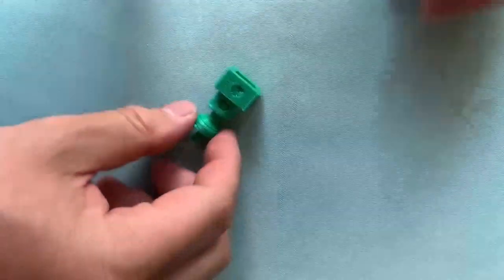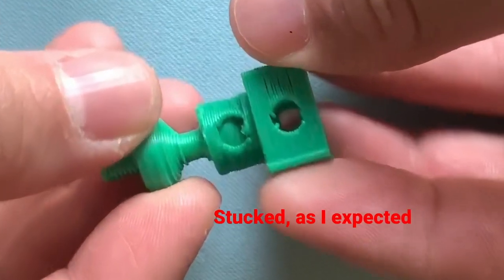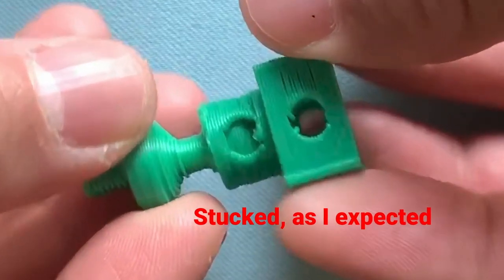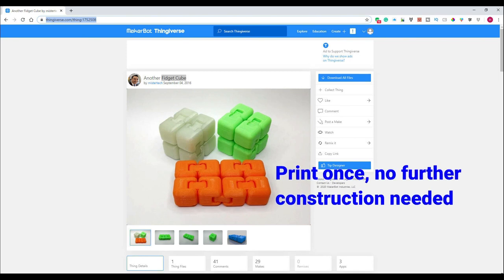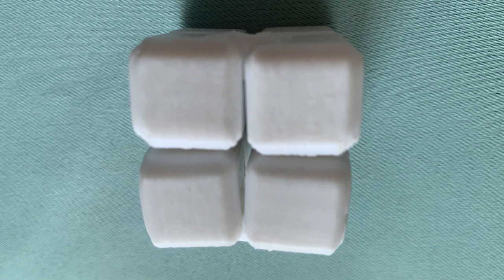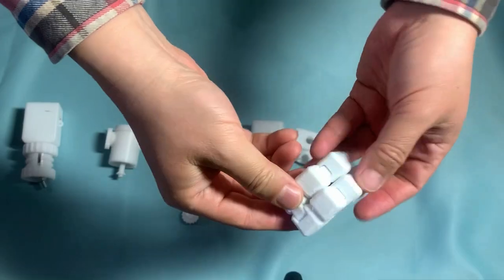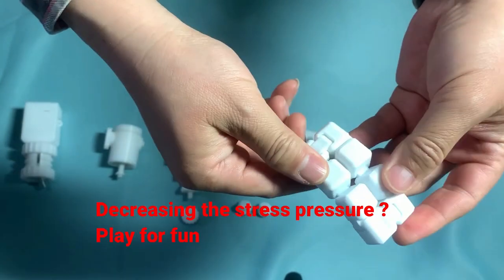It is stuck as I expected. That's right. Since I have experience with how to break it. This fugitive cube is one of my favorite gadgets, decreasing the stress pressure. It is only printed one time with no further construction. You just rotate it and break the weak link between and inside.